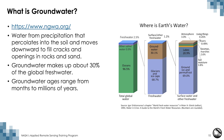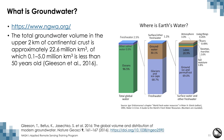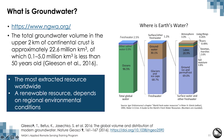Groundwater age ranges from months to millions of years. The total groundwater volume in the upper 2 kilometers of Earth's crust is about 22.6 million cubic kilometers, of which about 0.1 to 5 million cubic kilometers is less than 50 years old. Groundwater is the most extracted resource worldwide. It is a renewable resource, but its renewal rate depends on regional environmental conditions and the rate at which groundwater is withdrawn.